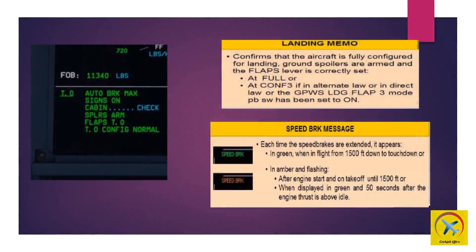The GPWS landing flap 3 mode push button switch has been set to on. Each time the speed brakes are extended, a speed brake message appears in green when in flight. It shows in amber and flashing after engine start and on takeoff until 1,500 feet, or when displayed in green and 50 seconds after engine thrust is above idle.